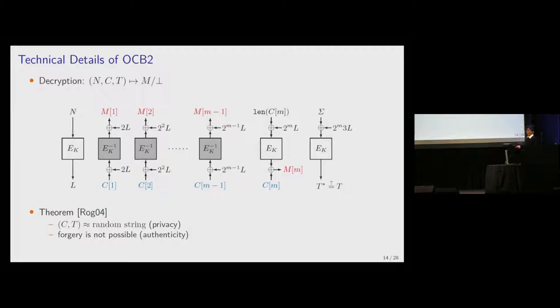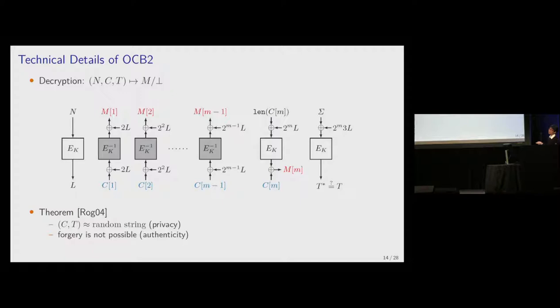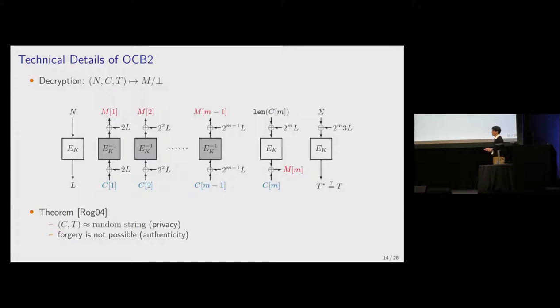For decryption, given (N, C, T), we first compute L, then compute all masks and apply the block cipher in the inverse direction. For the last block, we decrypt in counter mode using the forward direction of the block cipher to obtain M. We then compute the checksum and check if it matches the received tag. If equality holds, the message is returned; otherwise, the reject symbol is returned. There is a theorem showing the ciphertext and tag look like a random string, ensuring both encryption security and that forgery is not possible.